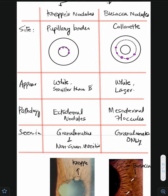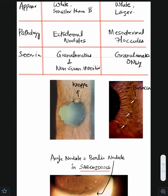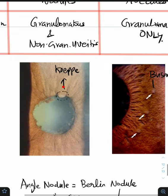Koeppe nodules are seen in both granulomatous as well as non-granulomatous uveitis, whereas Busacca nodules are seen only in granulomatous uveitis conditions. This is the typical Koeppe nodule on the pupillary border, and this is the Busacca nodule seen on the collarette.